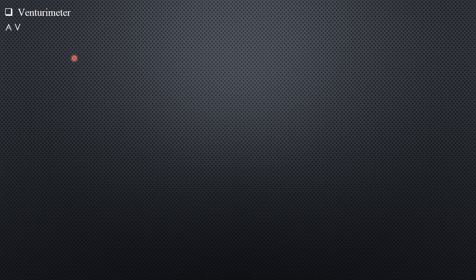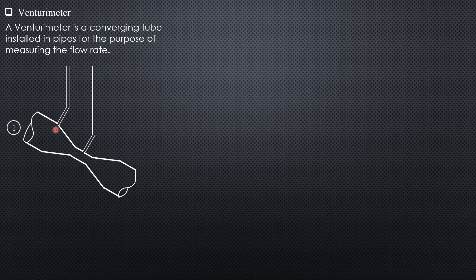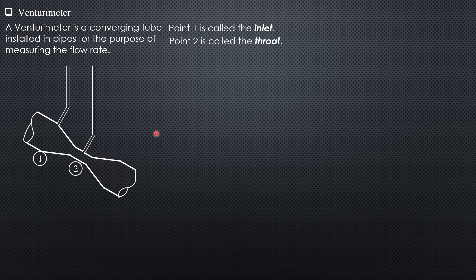Lastly, we have the Venturi meter. It is a converging tube installed in pipes for the purpose of measuring the flow rate or discharge. Point 1 is called the inlet and point 2 is called the throat.